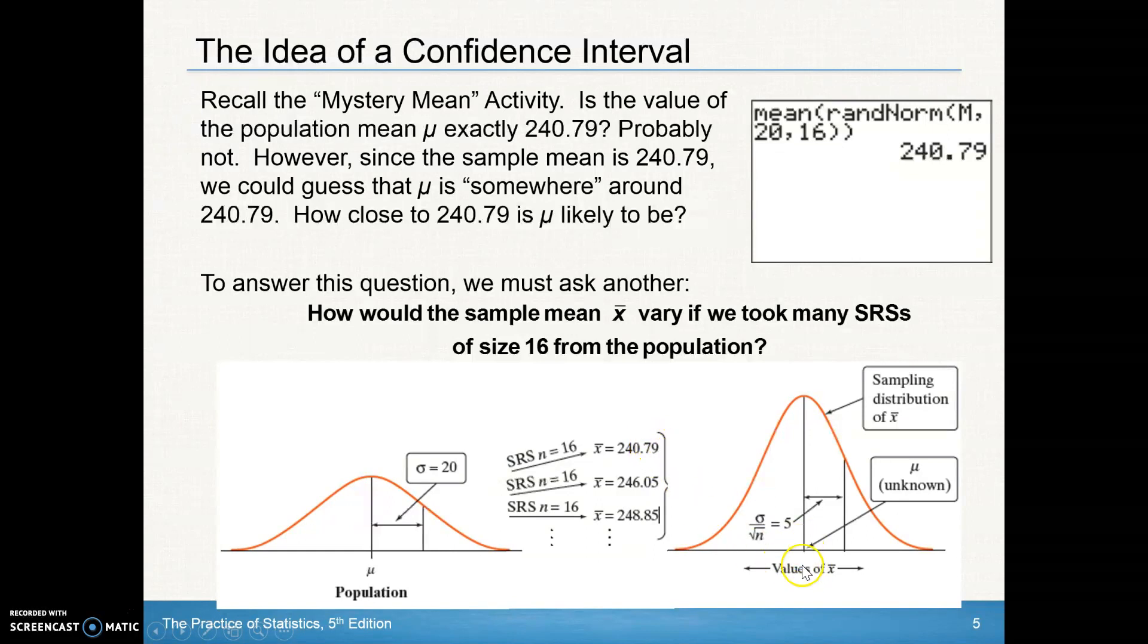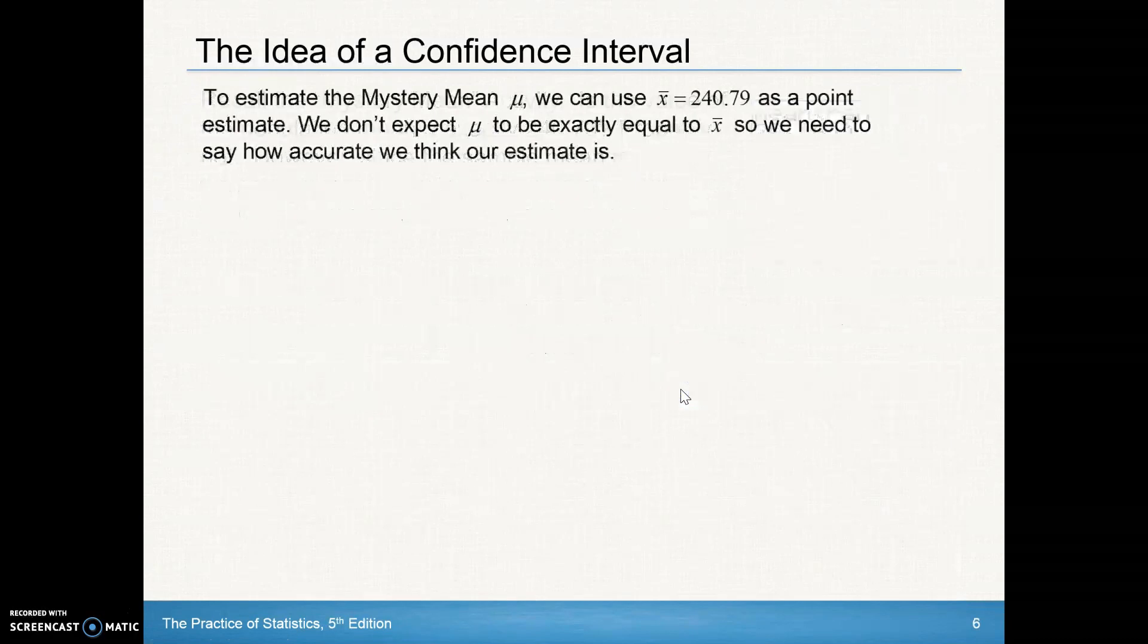And then the mean of these x-bars, the mean of these x-bars should be very close to our mu. That's our best non-bias estimator of that population mean. But now because we've also taken, these are sample means, our sampling distribution, our standard deviation of our sampling distribution is that sigma divided by the square root of n. Well, to estimate the mystery mean, we can use the x-bar. We can use that one value, that 240.79 that one group may have gotten as a point estimate, our x-bar point estimator. We don't expect mu to be exactly equal to x-bar. We'd be very lucky if it was.